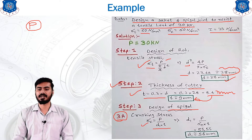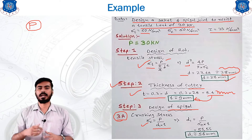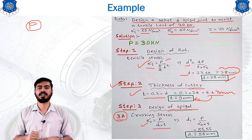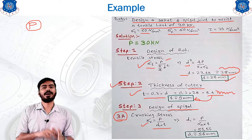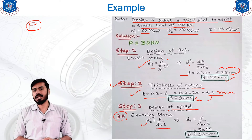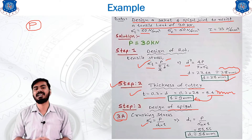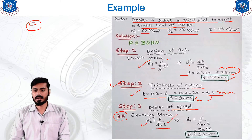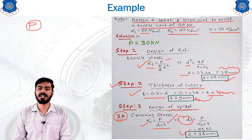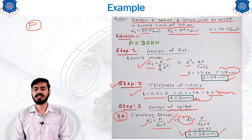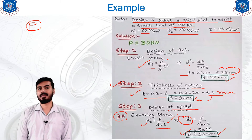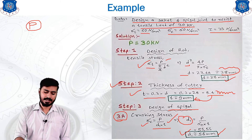The crushing stress equation is σc = P / (d1 × t). This equation was derived in the previous lecture. Making d1 the subject and substituting the known values, d1 = 56 mm. This is the diameter of the spigot, also called the inside diameter of the socket end. This completes the calculation using the assumption.